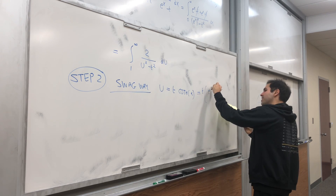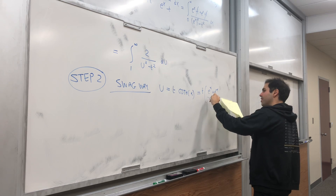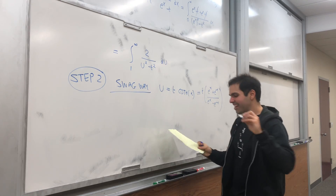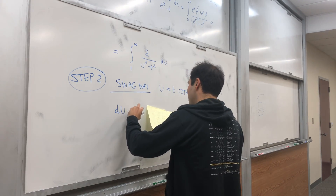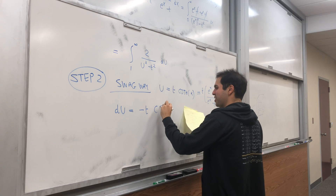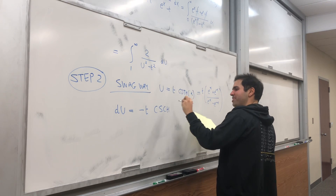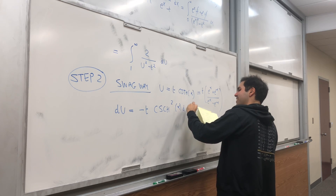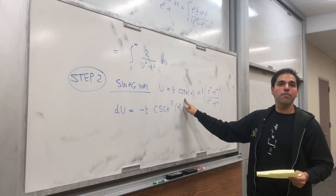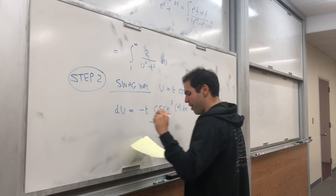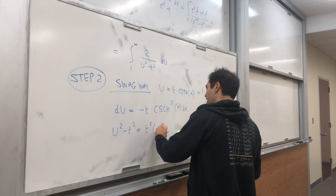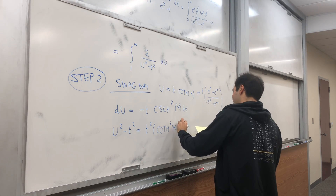It turns out the correct substitution is u = t·coth(α), which equals t·(e^α + e^(-α)) / (e^α - e^(-α)). Then du = -t·csch²(α) dα — there's a minus because we're dealing with hyperbolic function land. And u² - t² just becomes t²·coth²(α) - t², and coth²(α) - 1 = csch²(α), so u² - t² = t²·csch²(α).